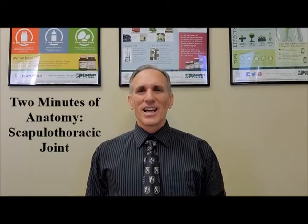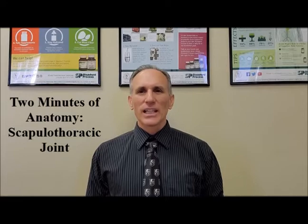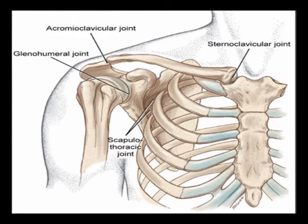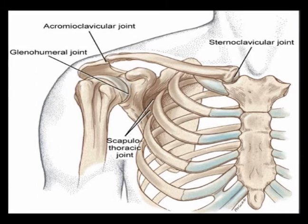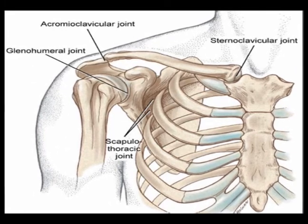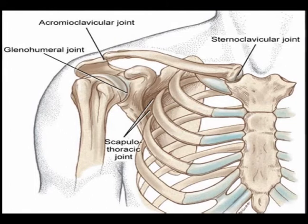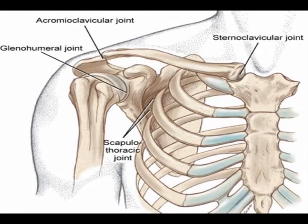Hello and welcome to Two Minutes of Anatomy. I am Dr. Donald Lozello of Championship Chiropractic in Las Vegas. The scapulothoracic joint is a joint that is the articulation between the posterior rib cage and the anterior scapula. This joint is one of the most versatile and mobile joints in the body.